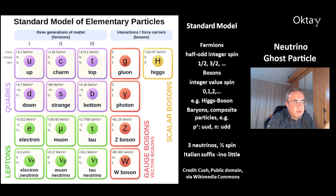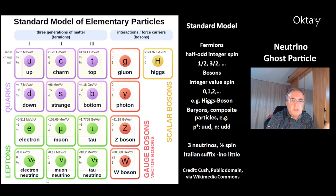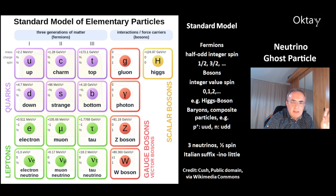At the bottom, you can see the group of leptons, and the three neutrinos are members of this group. There's the electron neutrino, the muon neutrino, and the tau neutrino. Neutrinos have a half-spin and are neutral — they have no charge. Their name comes from neutron, and the suffix -ino comes from Italian, meaning little, like for example bambino, meaning children. That's where the name neutrino comes from.